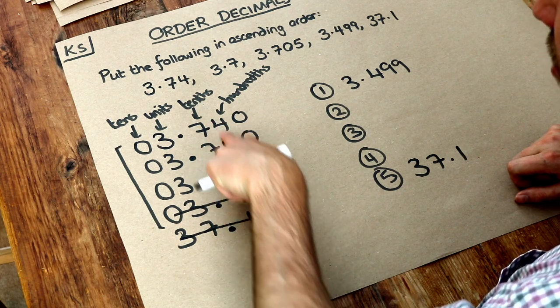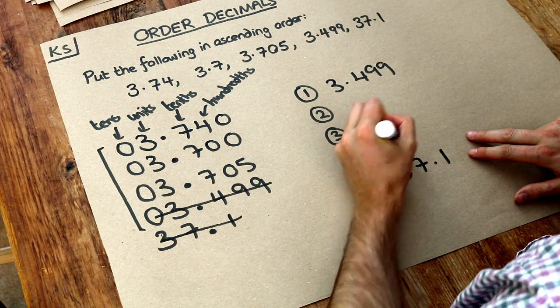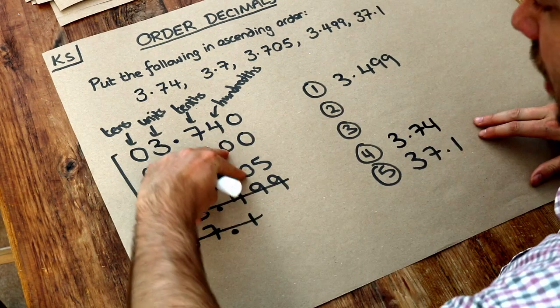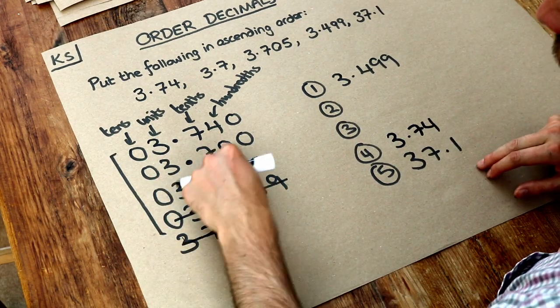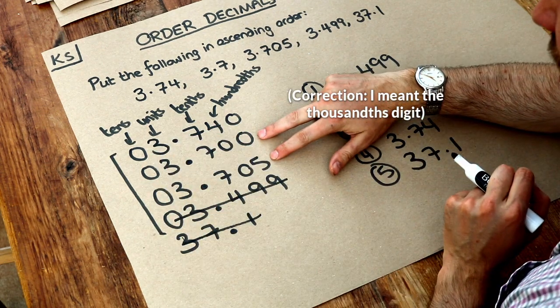So out of these hundredths digits, which one is the smallest? Well four is the biggest so let's put that last, but these are both zero, so it's a draw and then we have to go to the next digit.